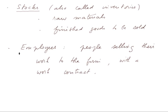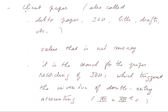We saw employees — that is, people selling their work to the firm but with a work contract. And we saw the most important concept of client paper, also called debtor paper, or how-you-build-a-draft — there are many other names. Essentially, it's some sort of private paper money.